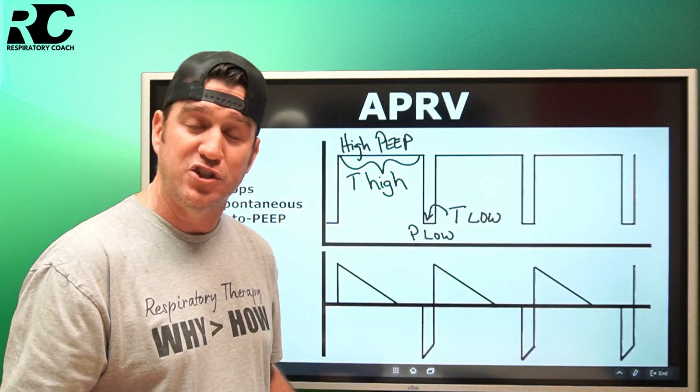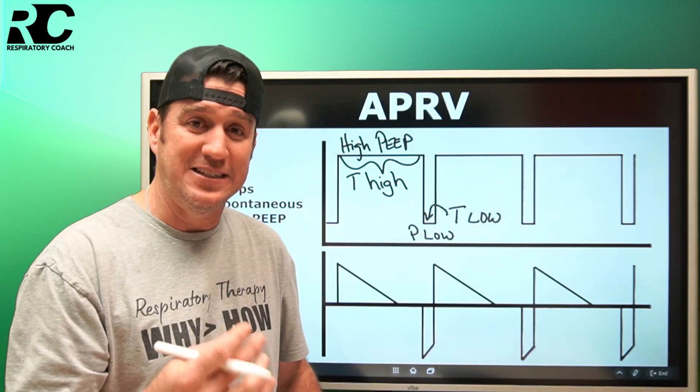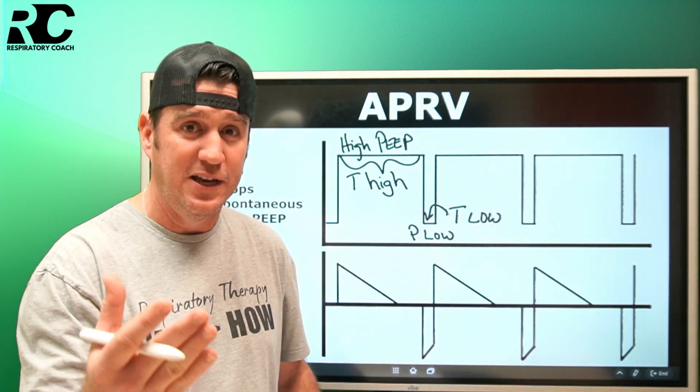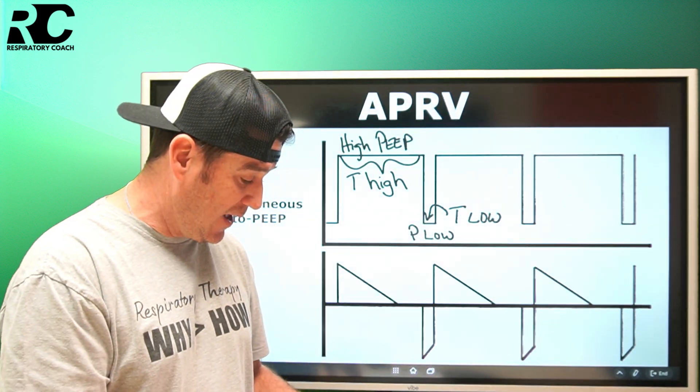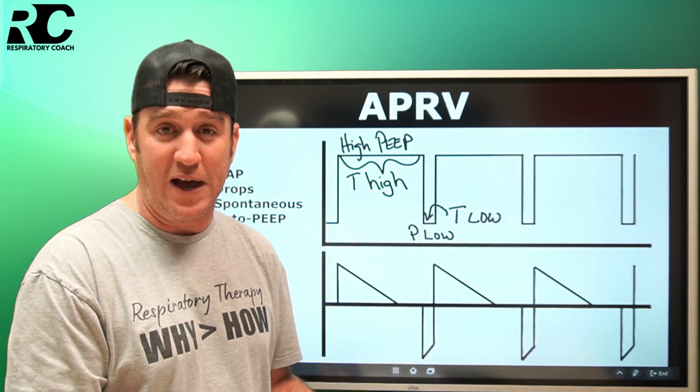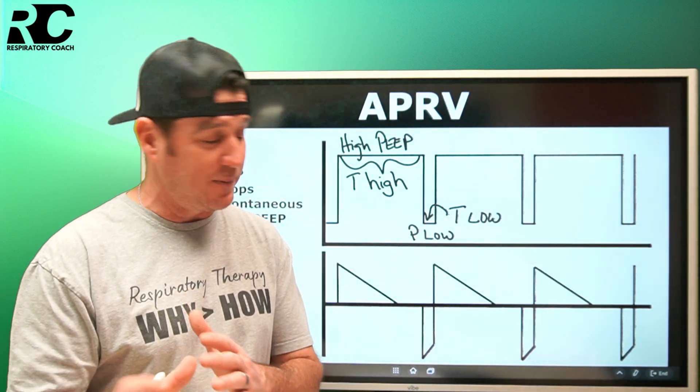The next thing we do is set the low PEEP or the pressure low. Low PEEP typically is set at a PEEP of zero. Egan's actually even says set at zero up to about five centimeters of water pressure, but you're using very low levels of PEEP if any at all.